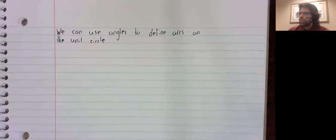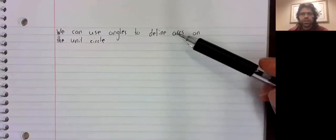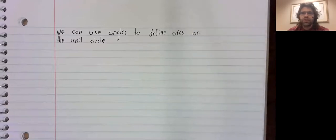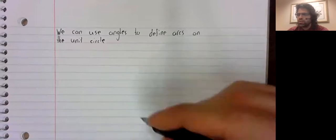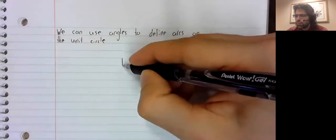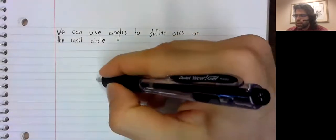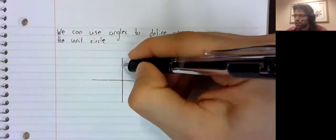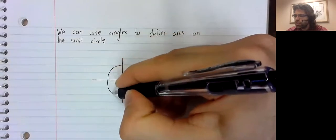We'll start with this observation that we can use angles to define arcs on the unit circle. How do we go about doing that? Well, let's draw the unit circle.